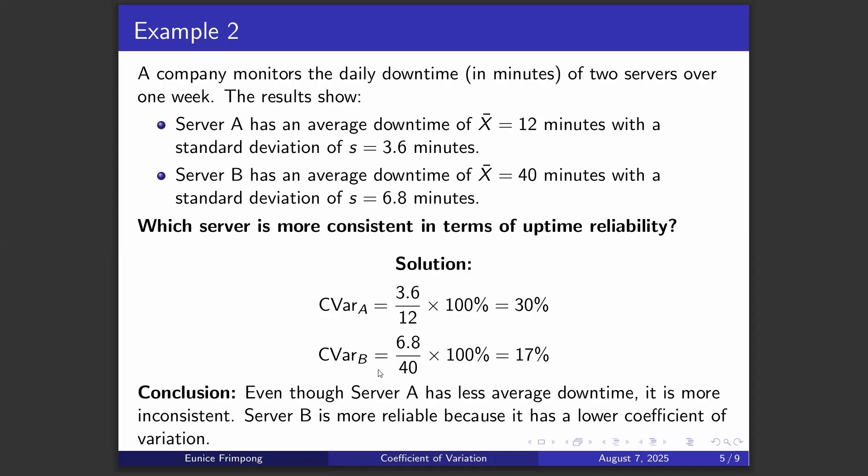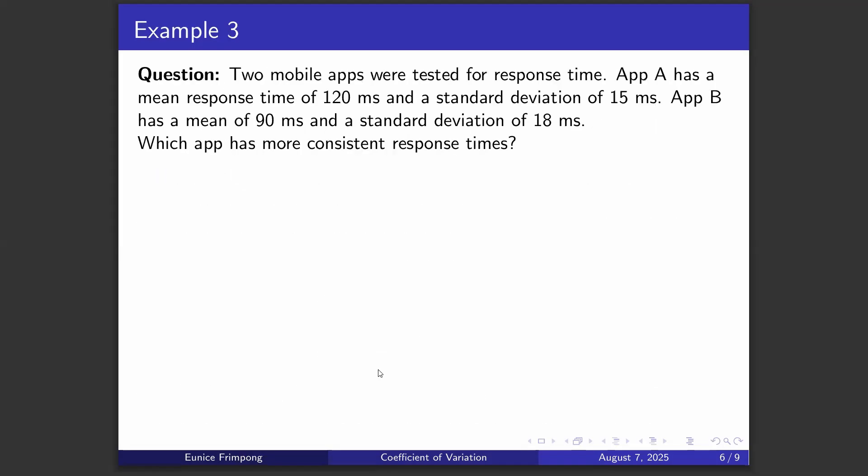In conclusion, even though Server A has less average downtime, it is more inconsistent. Server B is more reliable because it has a lower coefficient of variation. So when comparing two different data sets with respective means and standard deviations, check the CV of each and compare them to know which data set is more consistent.